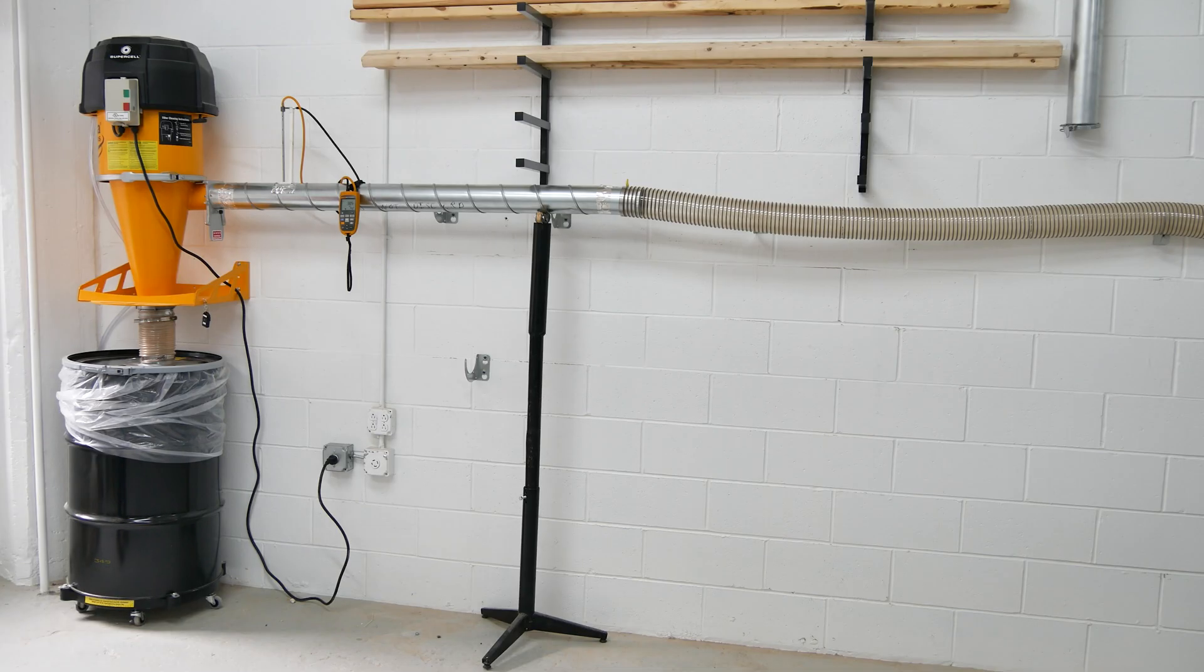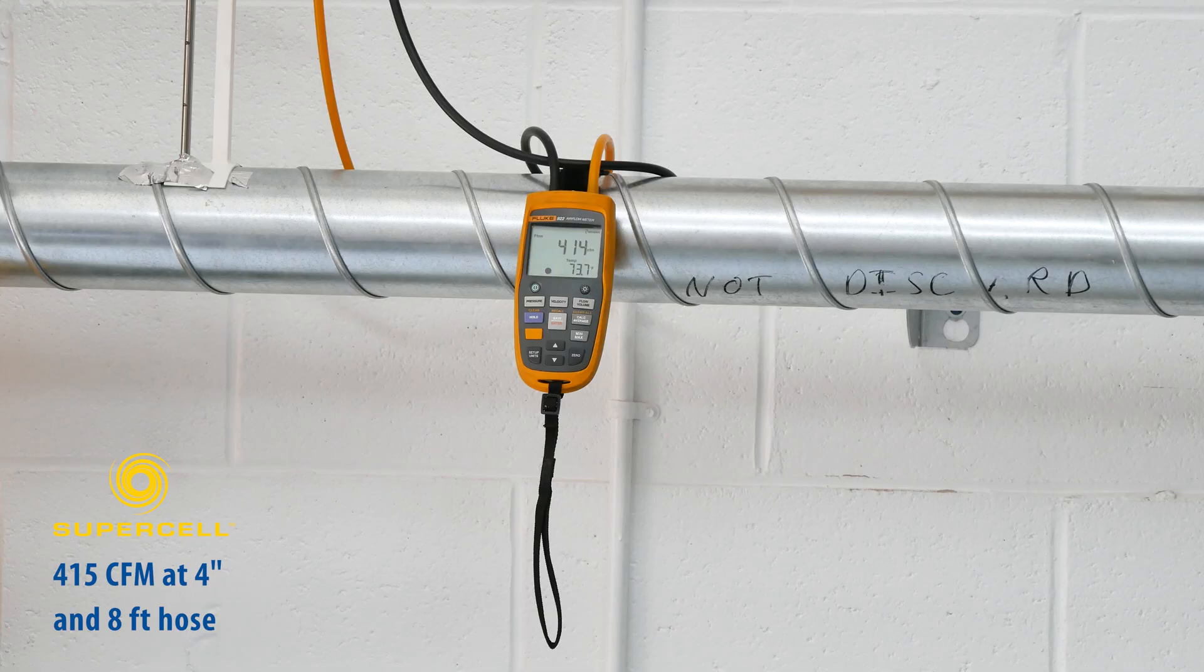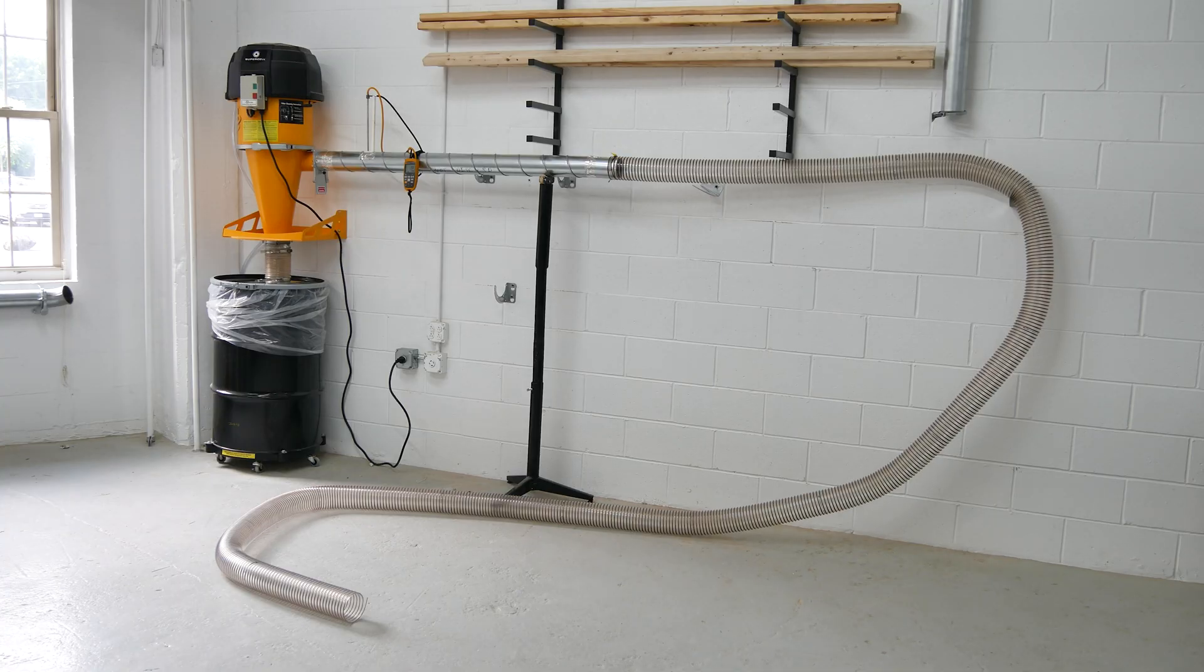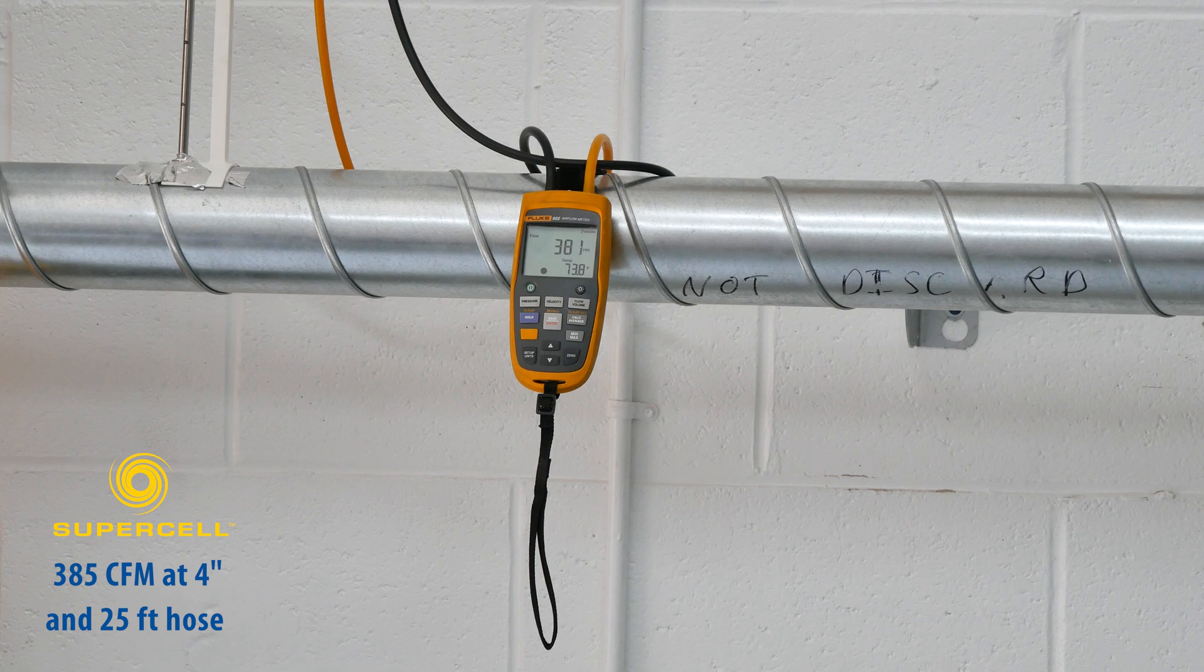First up, a 4-inch test pipe and a 4-inch by 8-foot hose attachment. With this setup, the Supercell measures 415 CFM. With the hose length increased to 25 feet, the Supercell reads about 385 CFM.